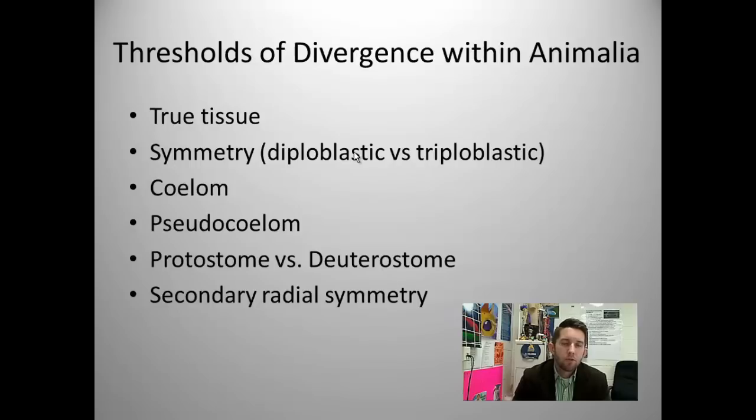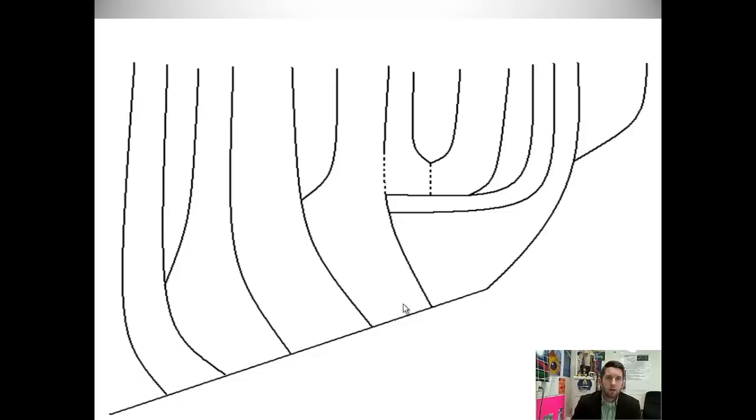Now, it's important as we're going through the cladogram that you commit to memory, somehow, the thresholds of divergence. So, why are things diverging and becoming different phyla? What homologies are we going to use? Well, I've listed them here. Early on, we diverge based on whether or not we have true tissue. Then we use the idea of symmetry. Compounded at that particular branch in our phylogenetic tree, we also look at the idea of whether or not we are diploblastic versus triploblastic. We're going to explain what those things mean. Do we have a coelom? Are we pseudocoelomates? Are we protostomes or deuterostomes? And finally, do we have secondary radial symmetry? This might seem like a lot of jargon now, but moving into this phylogenetic tree, well, here it is. Hopefully, it makes more sense as we finish this up.